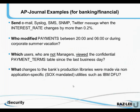AP Journal — Application Journal — addresses application security. We can send alerts when an interest rate or some other value changes by more than 0.2%. We can know who modified a certain table overnight or during vacation. We can determine which non-manager users actually viewed confidential data — because viewing confidential data is also a security breach. And we can report on what changes were made to the bank's production libraries via non-application utilities, which is a SOX-mandated requirement.